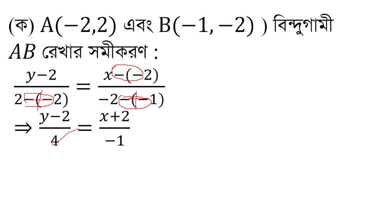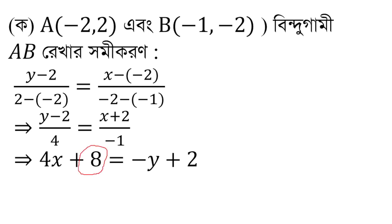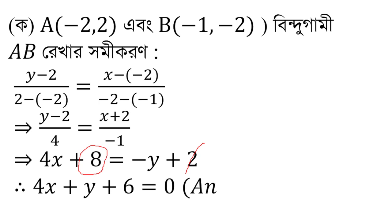2 plus 2 is 4. Minus 2 plus 1 is minus 1. Now we add r-a-r. If we add 4x to 4, we get 8. Minus 1 plus 2. So 4x plus 8 equals minus 1 plus 2. Then adding 2 and plus y, we get 4x plus y plus 6 equals 0. So 4x plus y plus 6 equals 0.